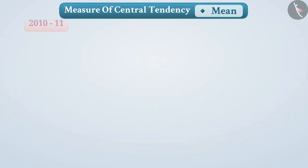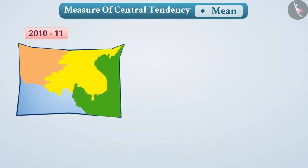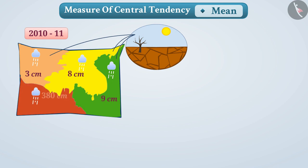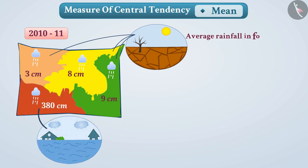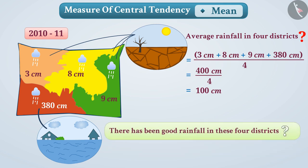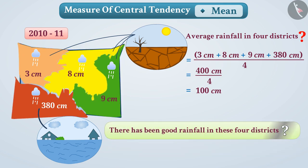Suppose in a year, three districts of a state receive rainfall of 3 cm, 8 cm, 9 cm due to which those districts had to face drought. And in the 4th district, the rainfall was 380 cm due to which the district faces flood. If we find the average rainfall in 4 districts, it will be 100 cm. Looking at this, would it be correct to say that there has been good rainfall in 4 districts?